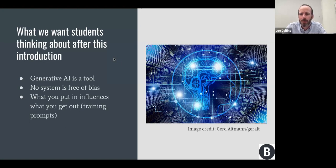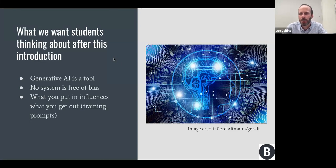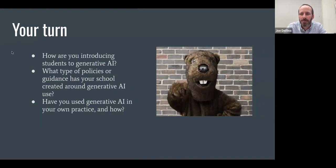We also try to weave through the entire week this thread: no system that humans have built is free of bias. You need to be aware of that, be thoughtful and critical about the systems you're interacting with, and think about what kind of bias they might have and how that might impact you or other people. If you ever go down the road of trying to create systems like this, it's even more important to think deeply about those topics. And finally, the thread that runs through everything: what you put in influences what you get out. If you put garbage into these models or your prompts, you will get garbage out.